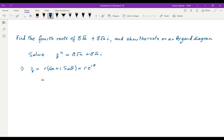This tells us that z⁴ is, by De Moivre's theorem, r⁴(cos 4θ + i sin 4θ), or we can write that if we want as r⁴e^(i4θ).